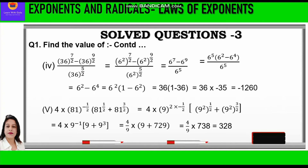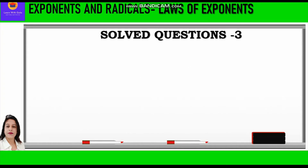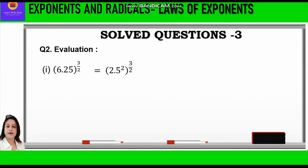This is how we have solved question number 1 — 5 parts based on laws of exponents. Now let's move to question number 2, which has 4 parts each involving decimals, evaluated using laws of exponents. Question 2 part 1 is 6.25 raised to power 3 by 2. If we ignore the decimal, 625 is a square of 25, and with two decimal places it is the square of 2.5. So we write 2.5 square whole raised to power 3 by 2, multiply the powers, and the 2s cancel to give 2.5 cube, which is equal to 15.625.